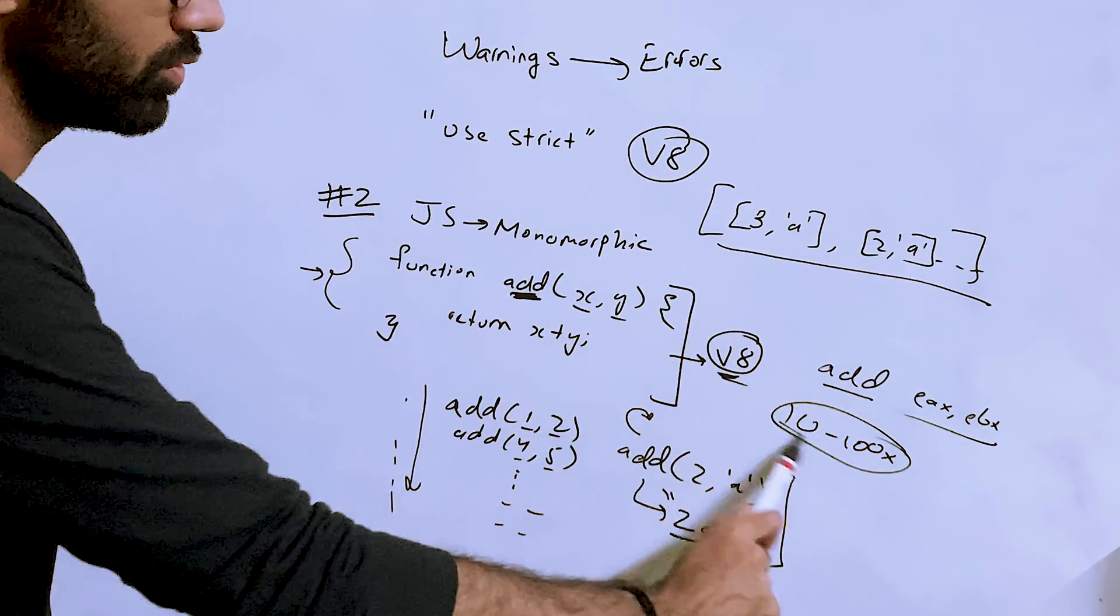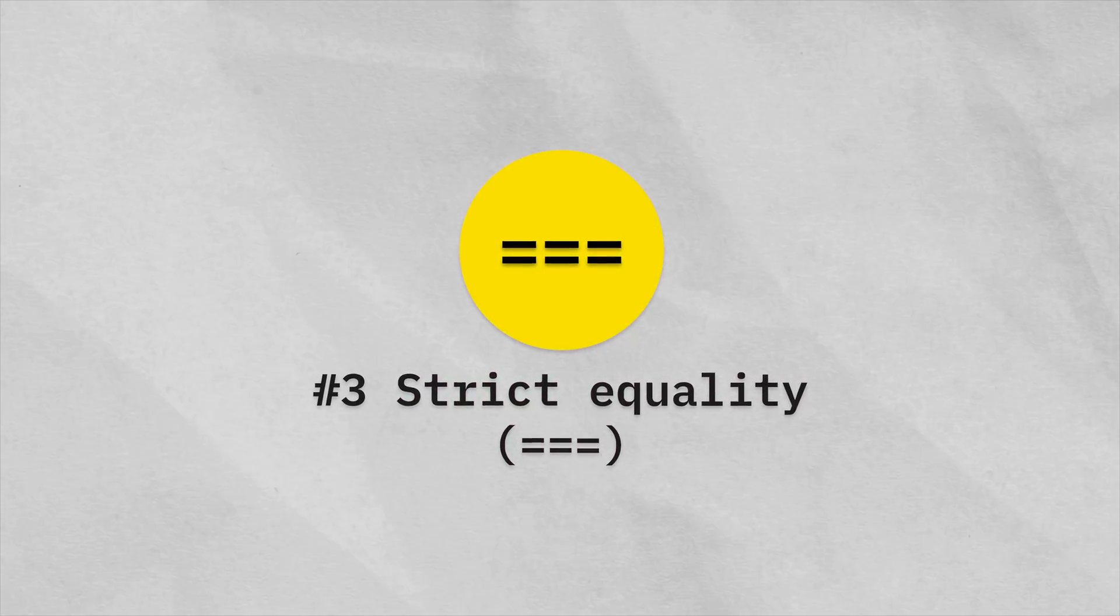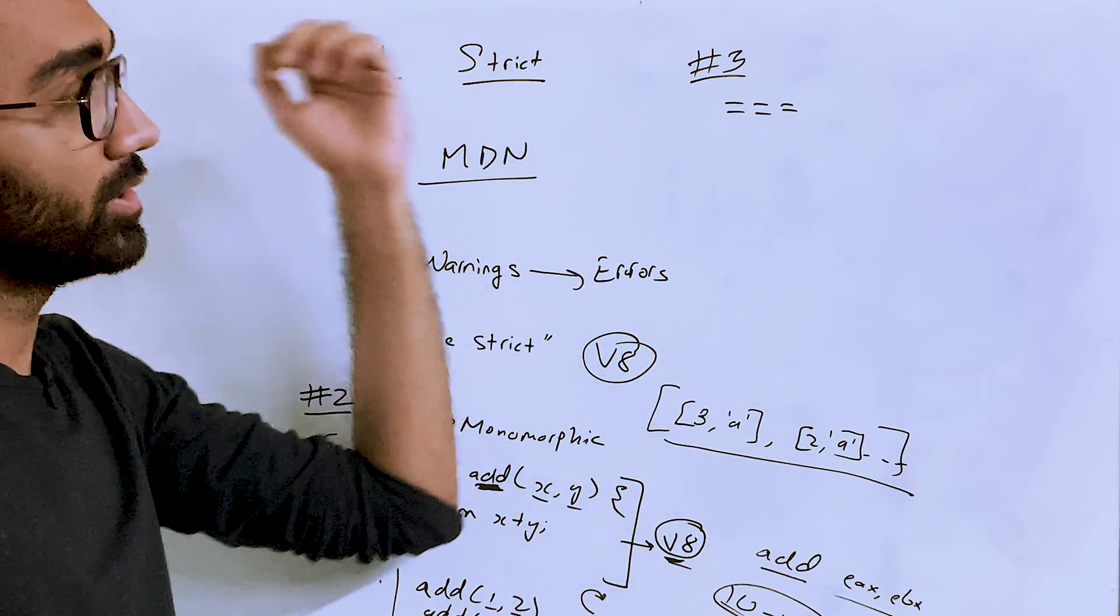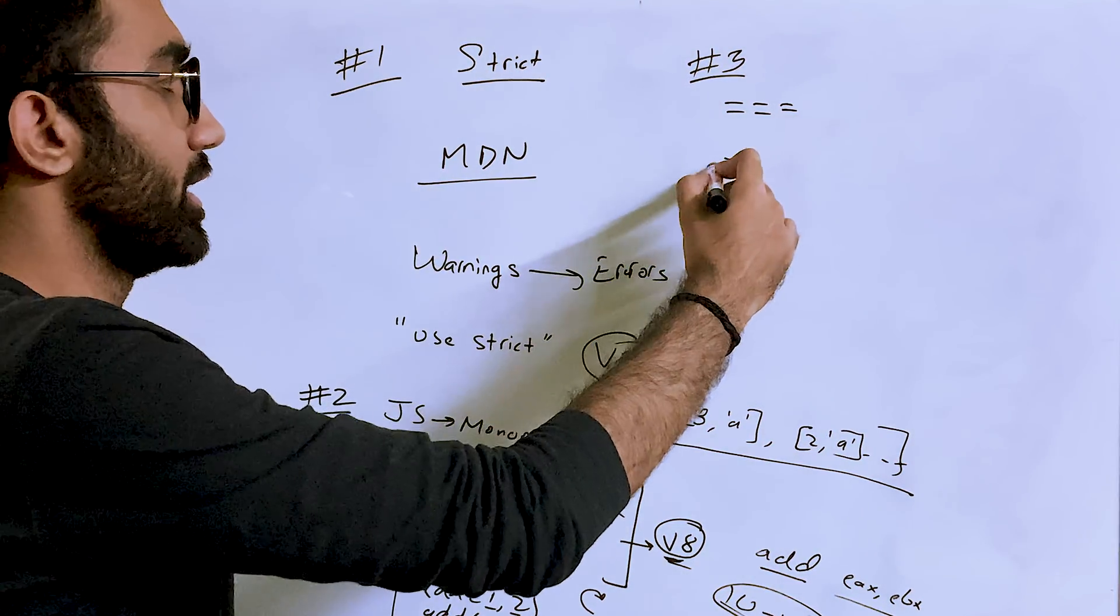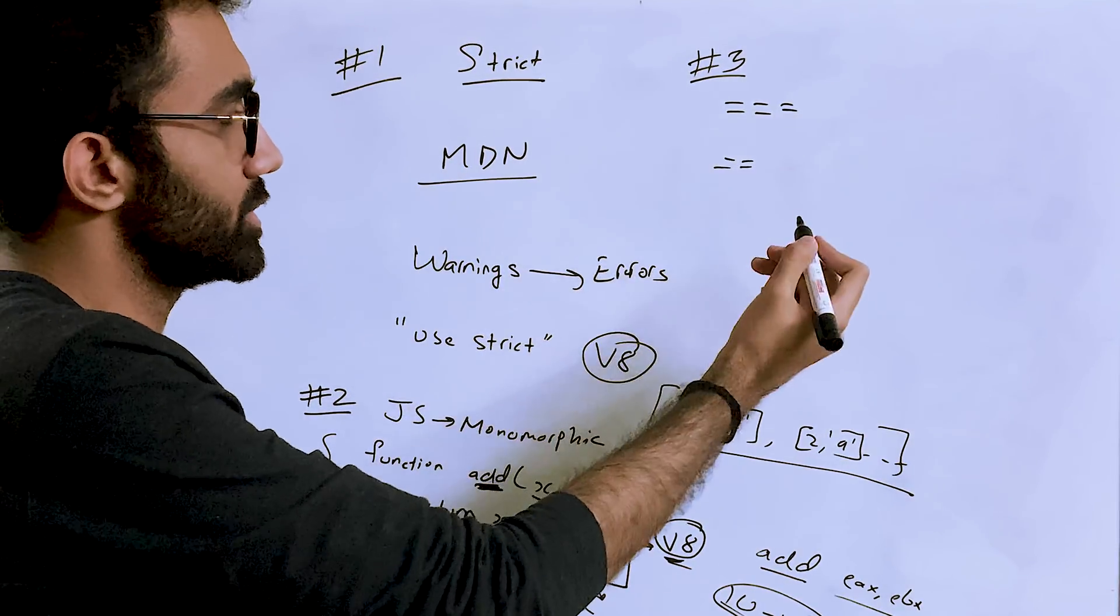It will still run it obviously because JavaScript supports it, but it will not be as performant. You will have a 10 to 100 times performance penalty on such code. The third tip which I have for you is to actually use strict equality in JavaScript.